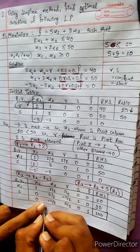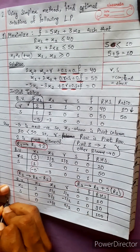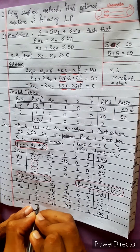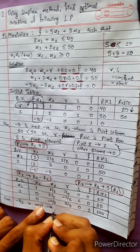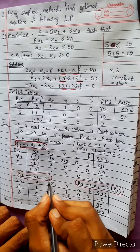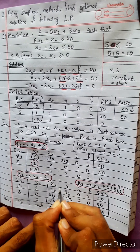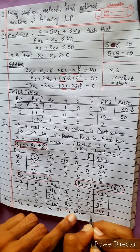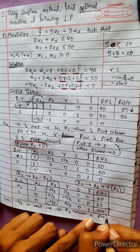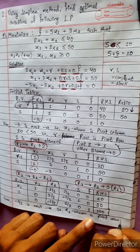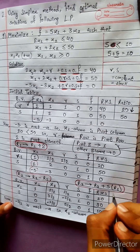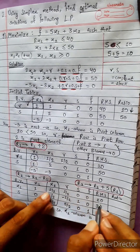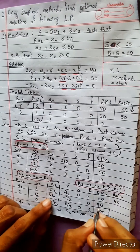We check the objective row — all values should be positive. Since minus 1 by 2 is the most negative value, the x2 column is the next pivot column. Computing ratios: 20 divided by 1 by 2 equals 40, and 30 divided by 3 by 2 equals 20. Since 20 is smaller, that row is the pivot row.